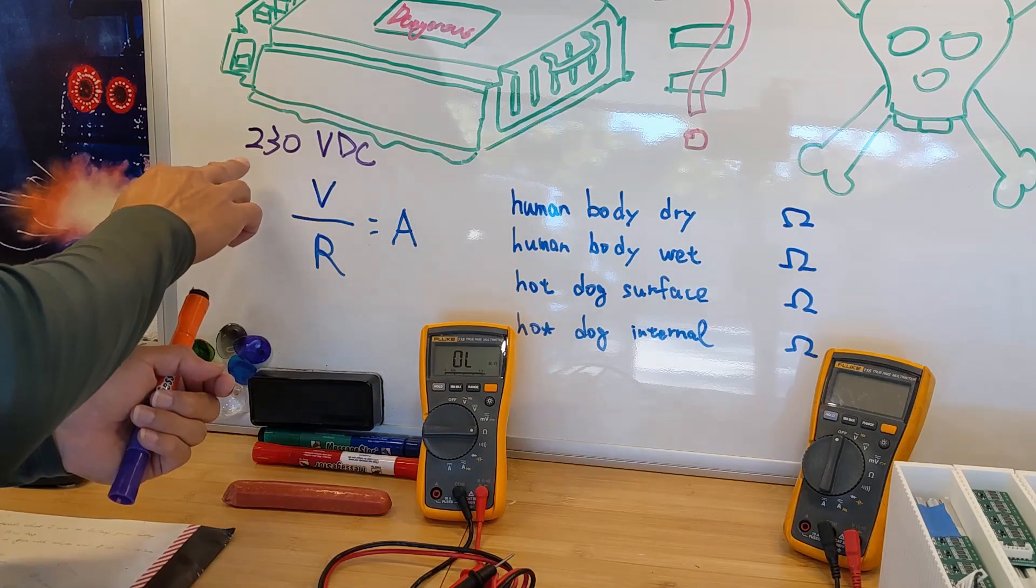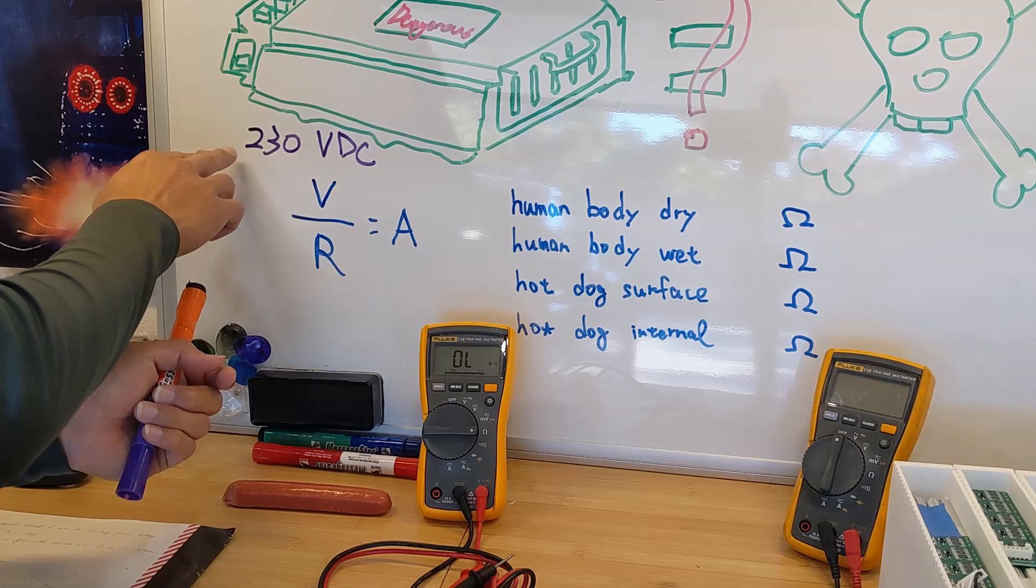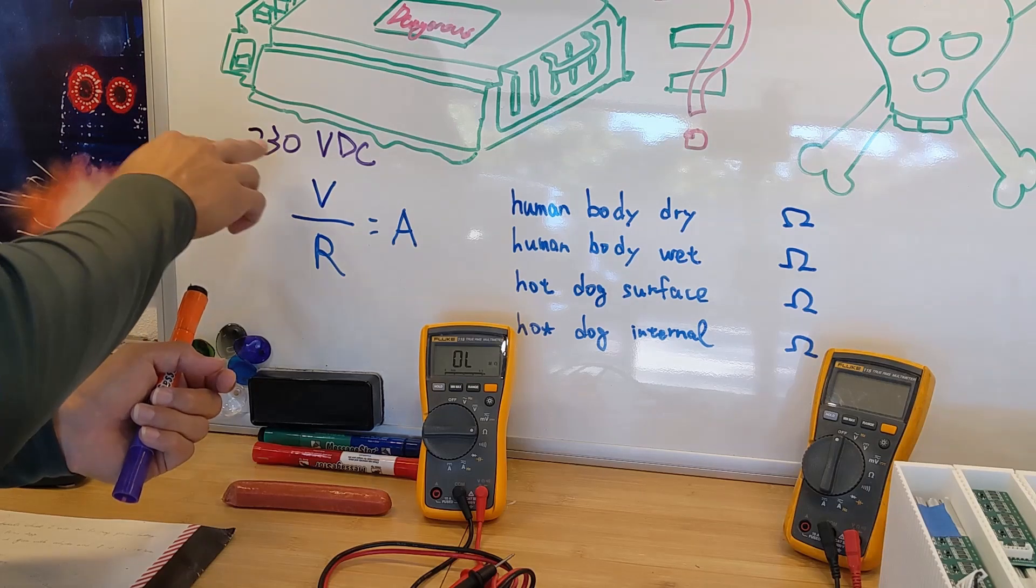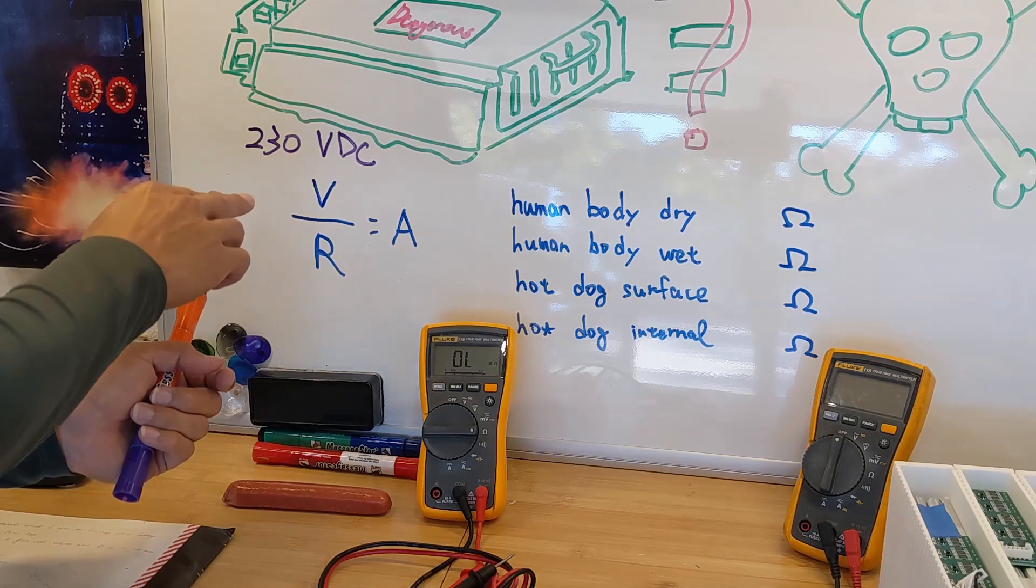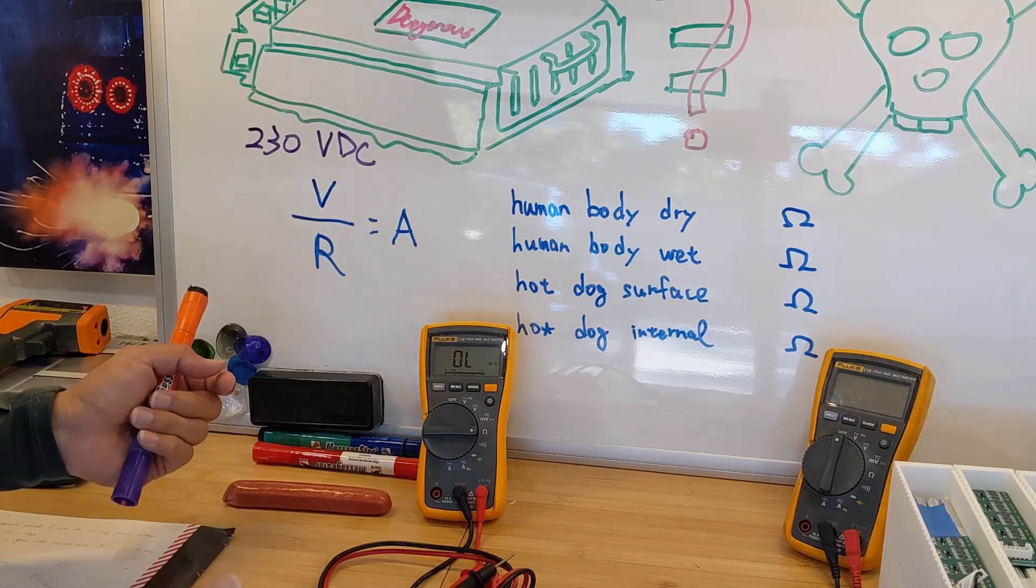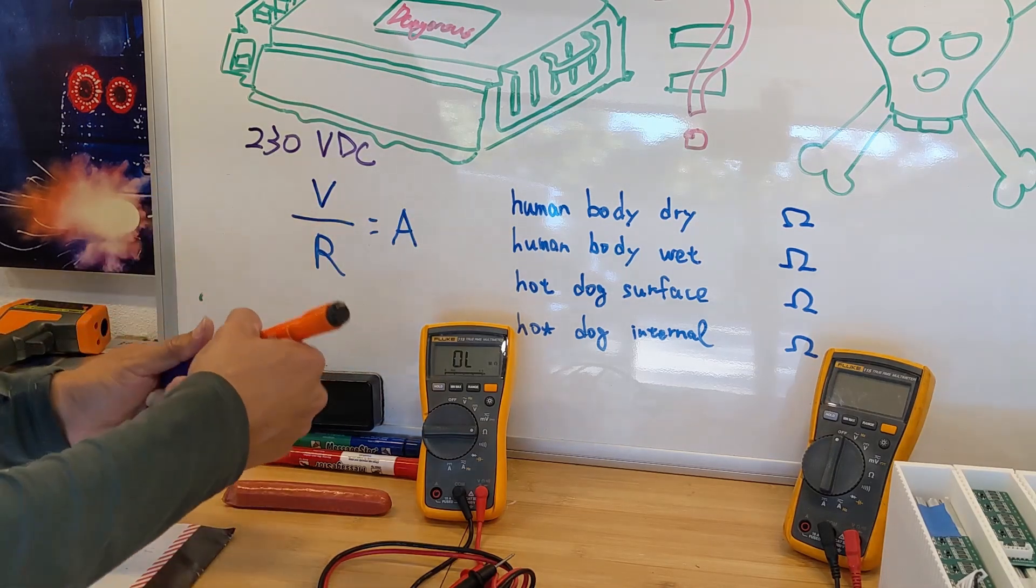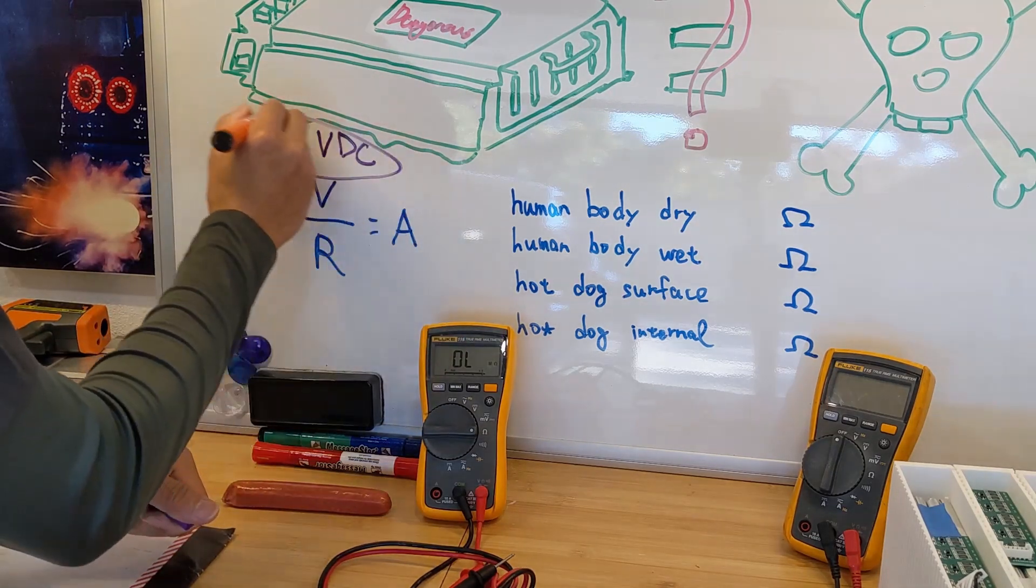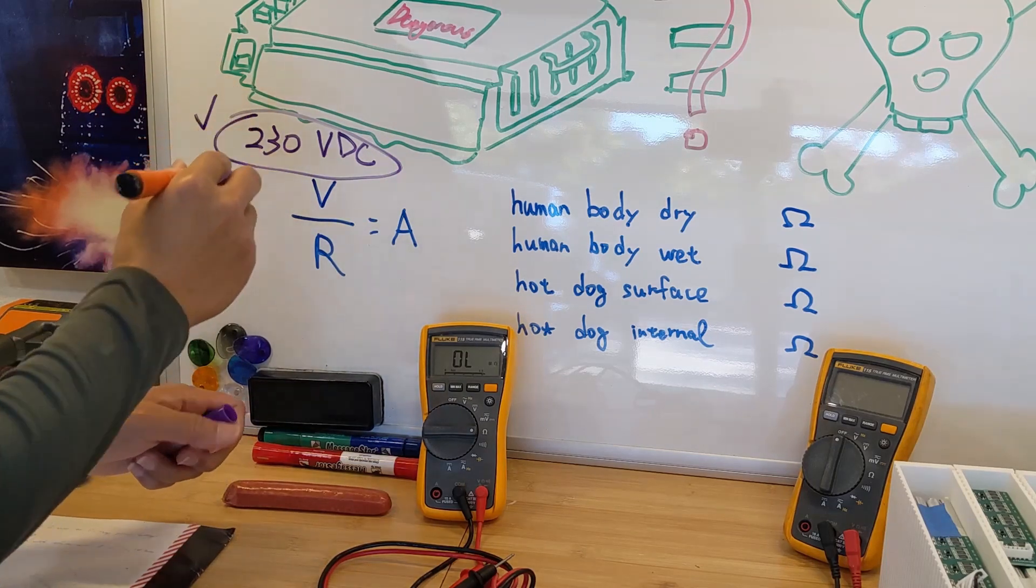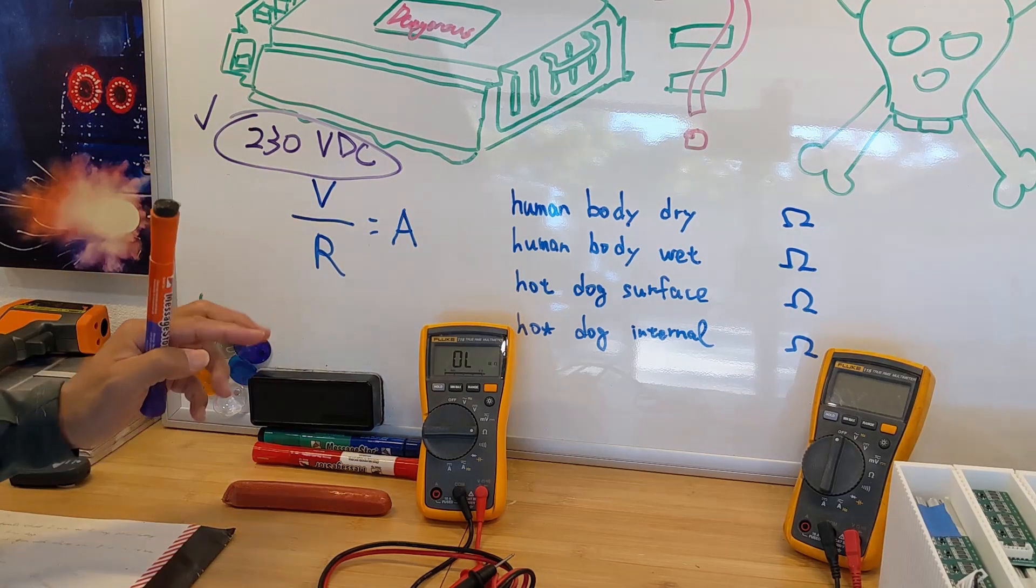But it's high, so it will still have the potential, the voltage potential, to penetrate your skin, into your body and conduct to another side of your body. So I would say this 230 is going to penetrate your body one way or another.